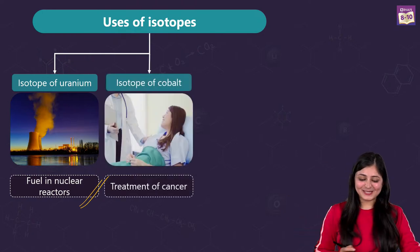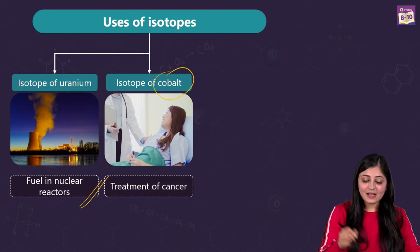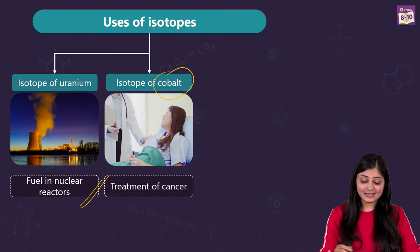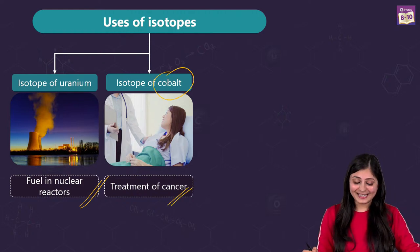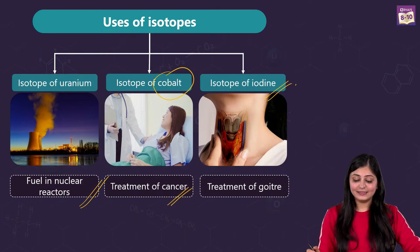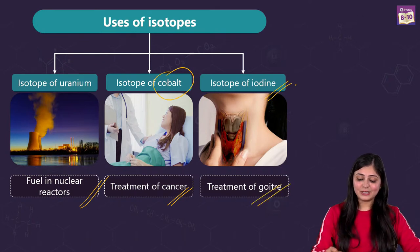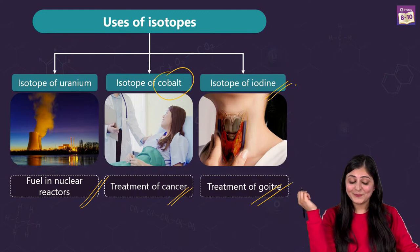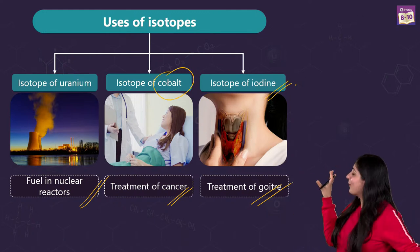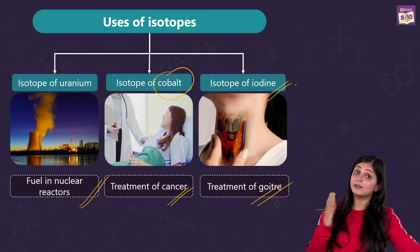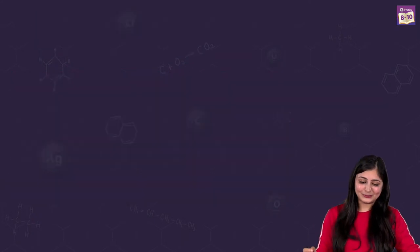Now let's look at the uses of isotopes. The isotope of uranium — uranium-235 — is used as fuel in nuclear reactors for generating electricity. The isotope of cobalt — cobalt-60 — is used in the treatment of cancer. The isotope of iodine — iodine-131 — is used in the treatment of goiter, related to iodized common salt. Different isotopes have different uses — that's the main point here.